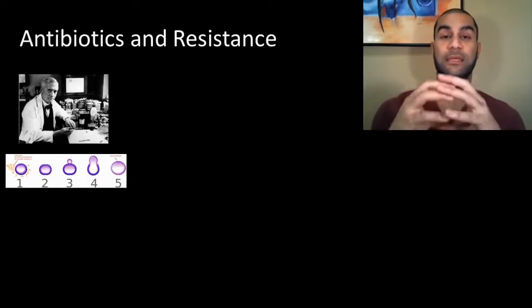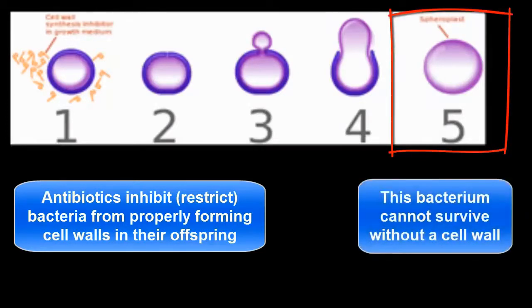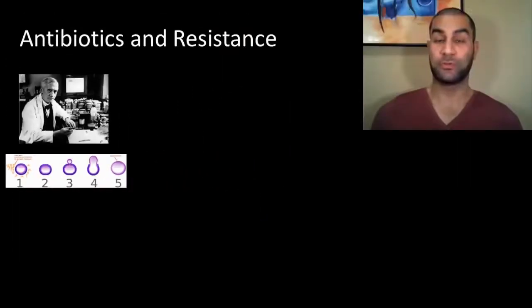The way antibiotics do that is by not allowing certain components of a bacterial cell wall to actually finish the process of forming. So when bacteria replicate and make more of themselves, if you're introducing an antibiotic, it actually keeps the cell walls of the bacteria from forming properly. And if you don't have a proper external wall or external barrier, just like at the end of the lytic cycle, a cell can't function if it doesn't have a stable internal environment. So these antibiotics actually keep new bacteria from being produced properly, and that helps control the population.